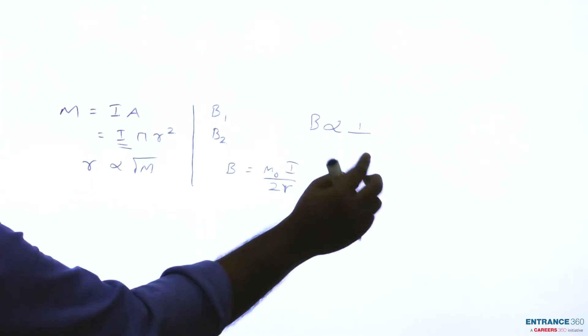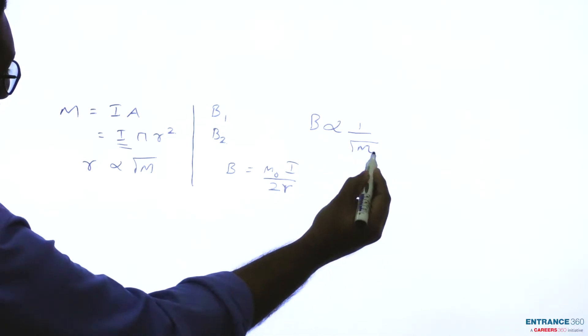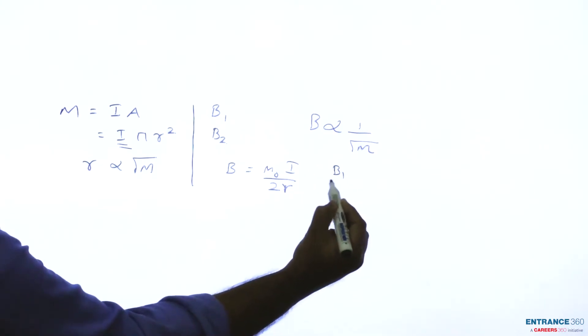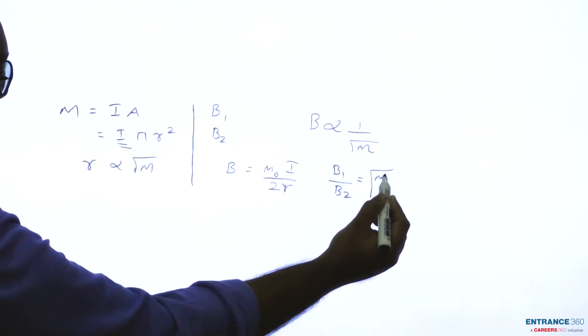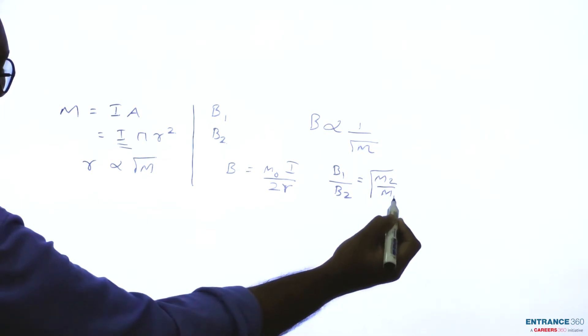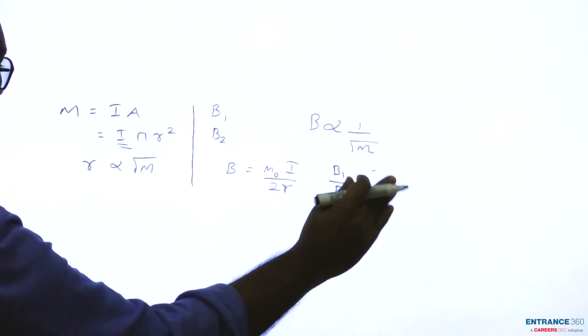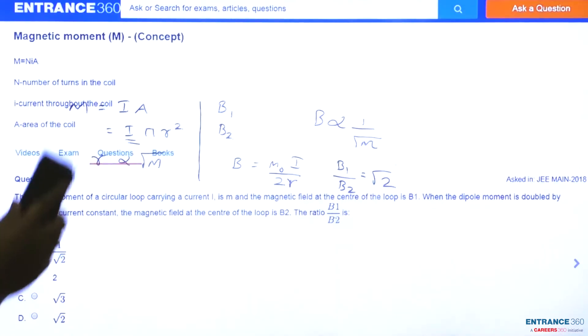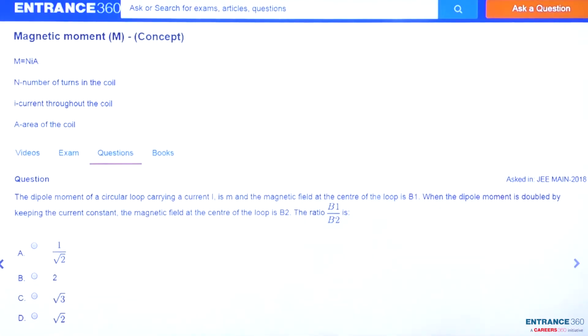So we can write b is inversely proportional to root of magnetic moment m. Now taking the ratios, b1 by b2 equals root of m2 by m1. Since m2 is 2 times m1, we will get the value of b1 by b2 as root 2. Now let's check the options. Root 2 is our option d, so the right answer is d.